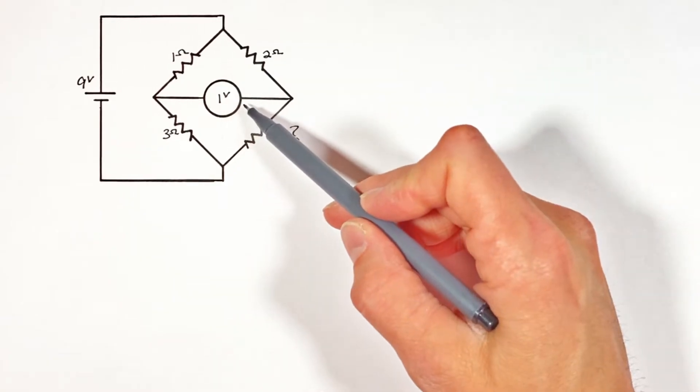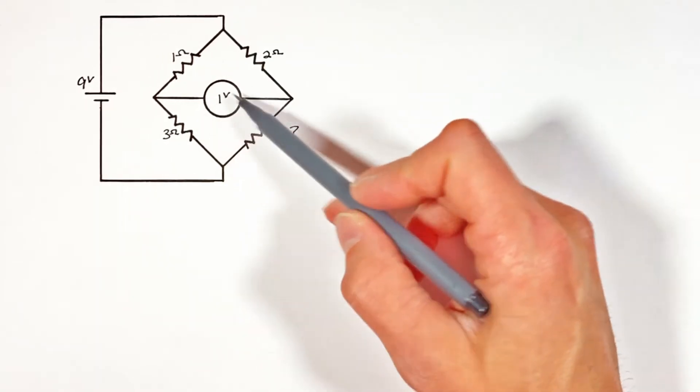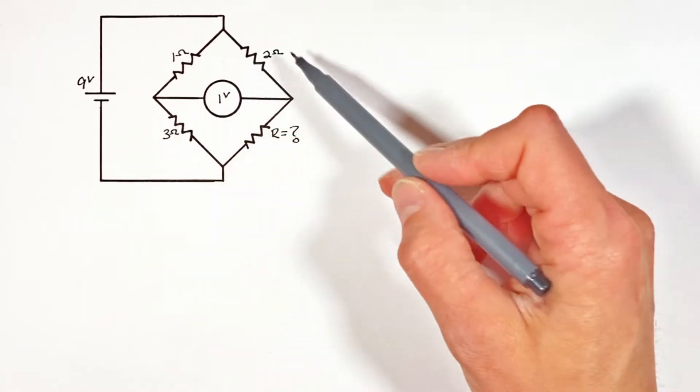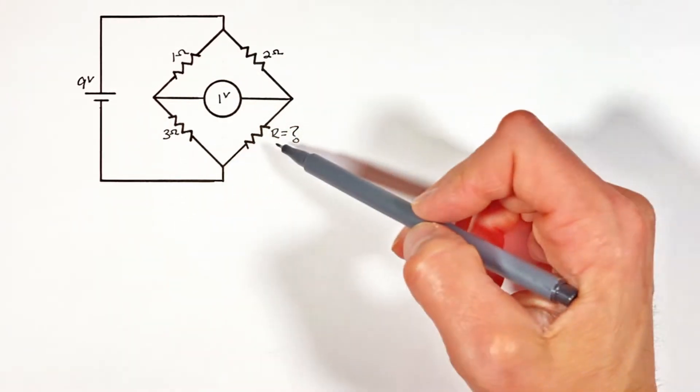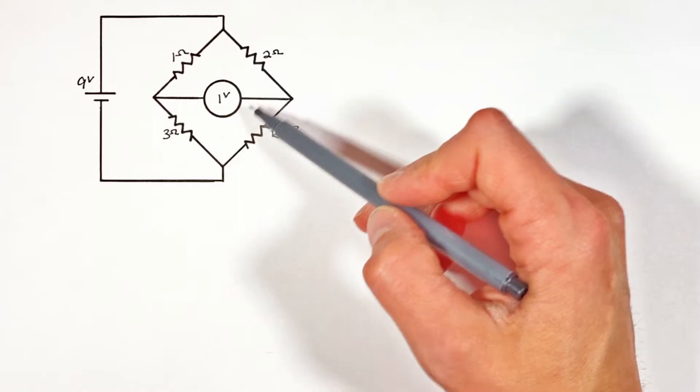Now to start this problem I want you to realize that a voltmeter has infinite resistance and really acts like an open switch, and so to get a better handle of what's going on in this problem I actually want to redraw this circuit in a way that might seem more familiar to what you've seen in the past.